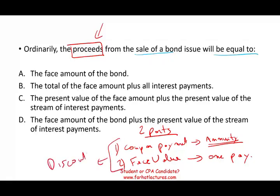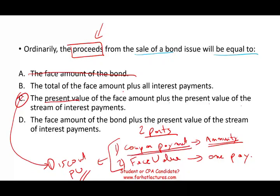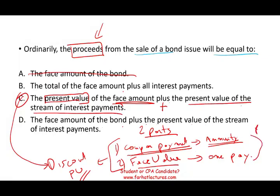So to find the price of the bond — to find the proceeds — you have to discount those two. It does not equal the face amount, and it does not equal the total of face amount plus all interest payments. The answer is the present value of the face amount plus the present value of the stream of interest payments. You discount both — the present value of the face value plus the present value of the stream of payments — and add those two together.